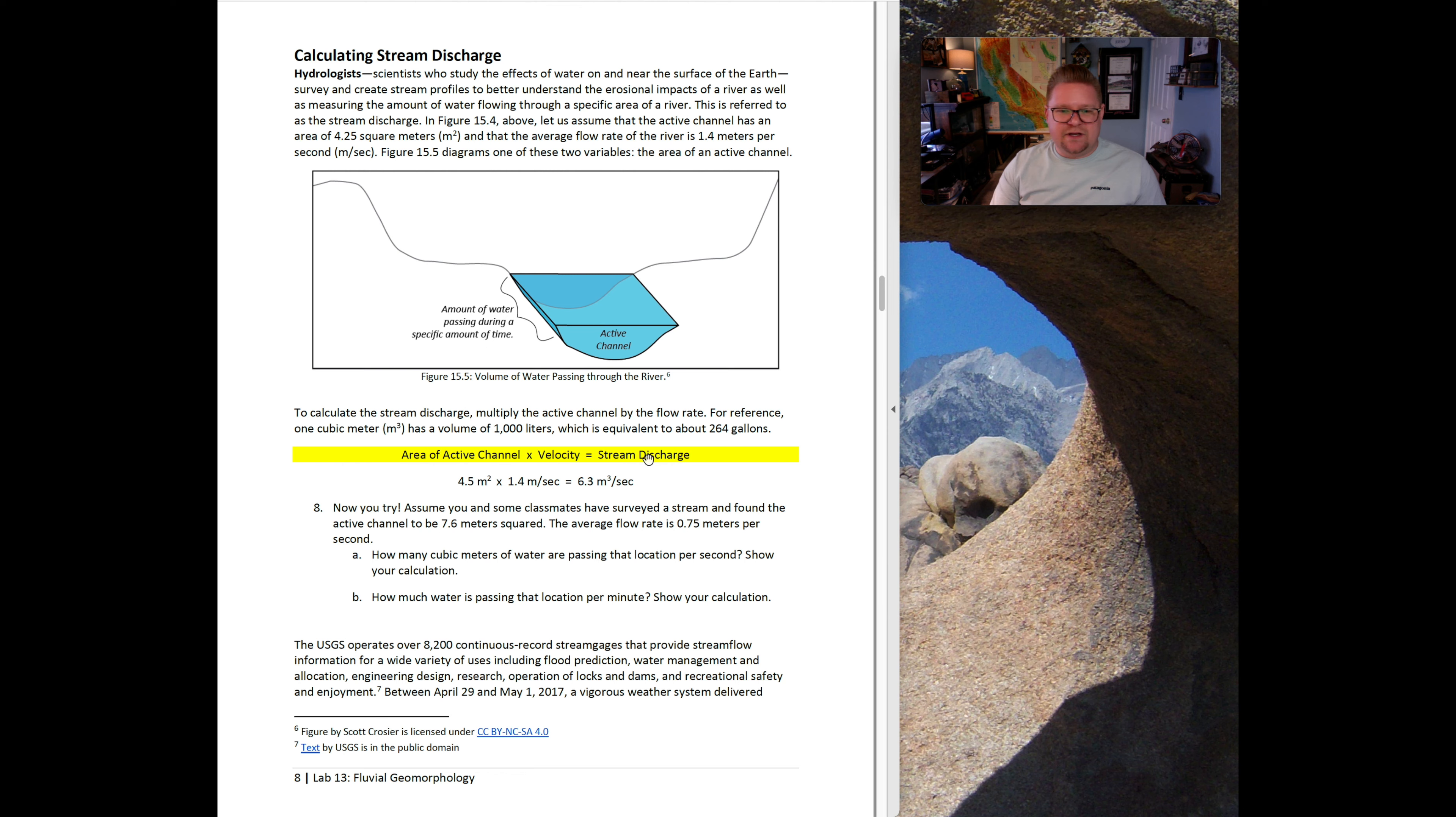In this particular sample, they're saying that maybe we measured this area and came up at 14 and a half square meters, and on average it's moving 1.4 meters per second. Therefore, the discharge is 6.3 cubic meters per second. Now you can try using that same formula. Assume that you and some classmates are surveying the stream and found that the active channel area is about 7.6 square meters, and the average flow rate is 0.75 meters per second. It's going to ask you to solve that in two steps. The USGS operates over 8,200 continuous record stream gauges that provide stream flow information for a wide variety of uses, including flood prediction, water management and allocation, engineering design, research operation, and so forth.